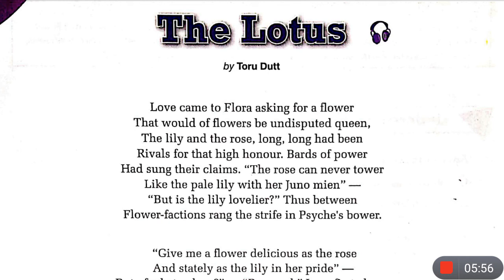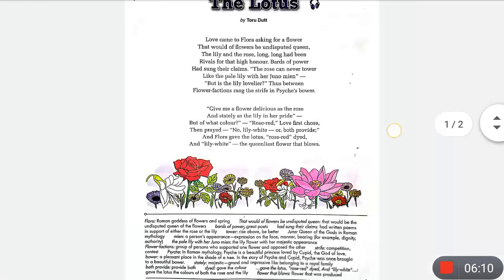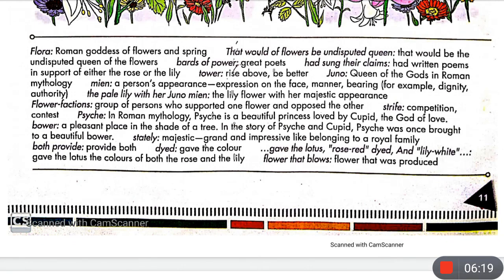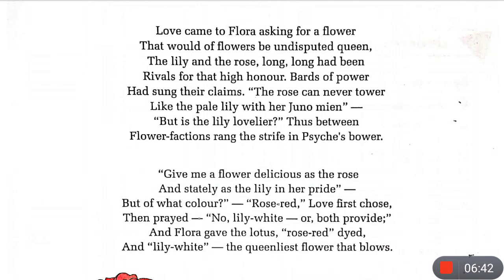'But is the lily lovelier?' — Just because the rose cannot stand like the lily, does that mean the lily is the most beautiful? 'Thus between flower factions ranked the strife in Psyche's bower.' Psyche is a beautiful princess loved by Cupid. A competition arose among the flower factions — groups supporting each flower — in Psyche's bower, meaning her shaded dwelling.